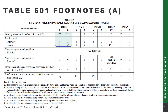Looking at the footnotes in Table 601, Footnote A primarily applies to Type 1 construction and appears under both the primary structural frame and bearing walls interior. Footnote A allows us to reduce the fire rating requirement by one hour when the element is supporting a roof load only. This is significant because, depending on the statistics, typically over 80% of all commercial buildings built in the U.S. are one story only — meaning they're only supporting a roof — making this a critical consideration for Type 1 construction in a one-story building.